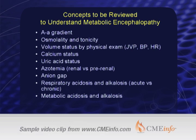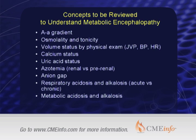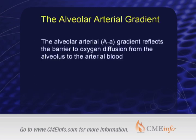Here is a list of the concepts we're going to review before we look at our first patient: the AA gradient, or the alveolar arterial gradient; osmolarity and tonicity; how to assess the volume status of a patient by physical examination; calcium and uric acid status; azotemia — that is, when the BUN goes up, is it renal or pre-renal azotemia; the concept of the anion gap and how to calculate it; and respiratory and metabolic acidosis and alkalosis.